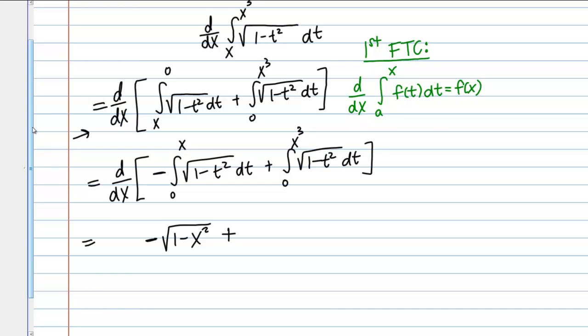Plus, now this one's a little bit stranger, but you should have already seen how to approach this. If you have, instead of just X, a function of X as your upper bound there, you simply take that function and plug it in for T. In other words, instead of plugging in X for T, I'm plugging in X cubed for T. I have 1 minus X cubed squared under my root. Then, there's one more important thing, and this comes from the chain rule. You have to multiply by the derivative of that function, so I need to multiply by 3X squared.